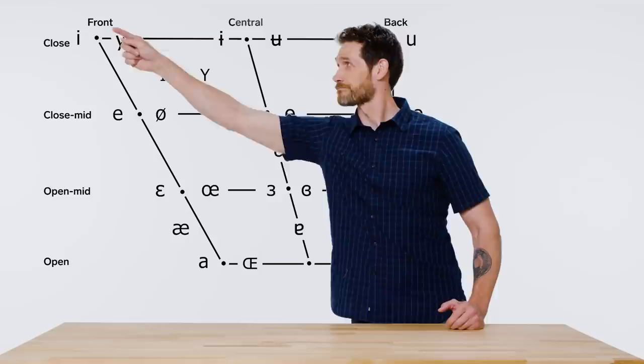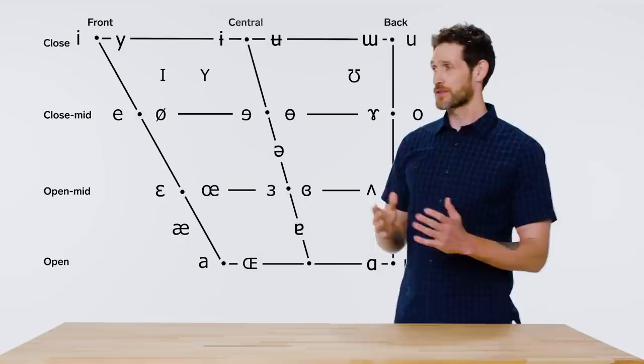We call it the vowel space. It looks like this. It's a quadrilateral. The front of the mouth, it's basically a person facing to the left like this, we're in a cross-section. The front of the mouth is over here, back of the mouth is over here.